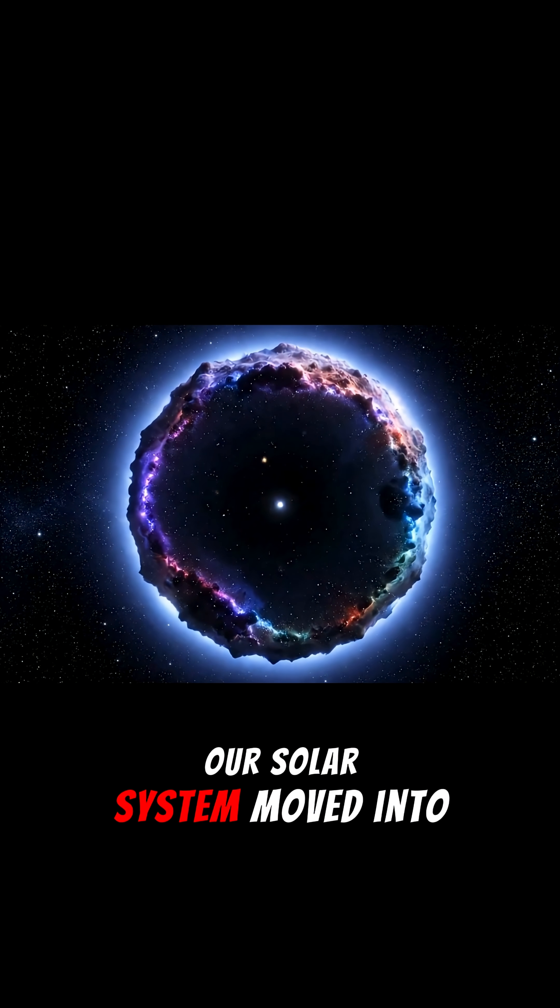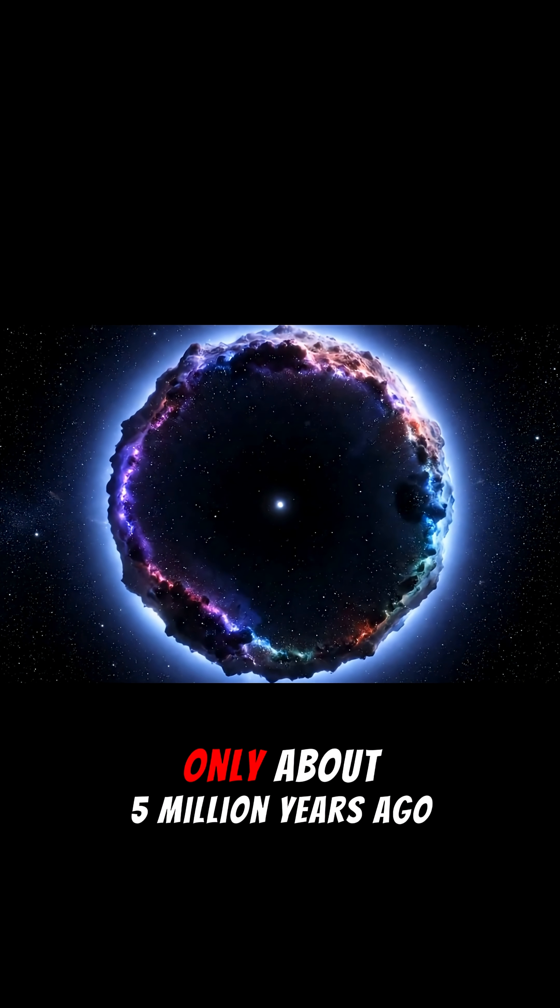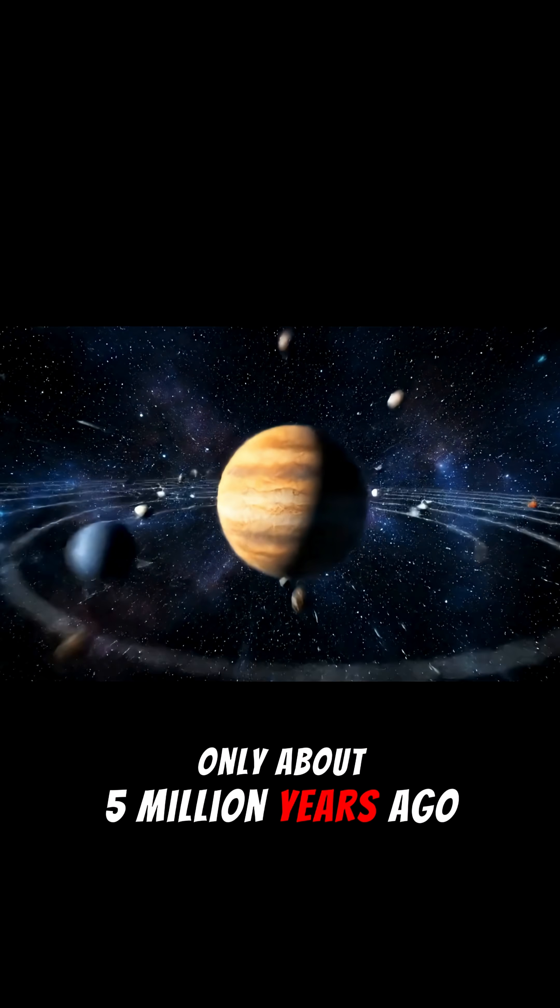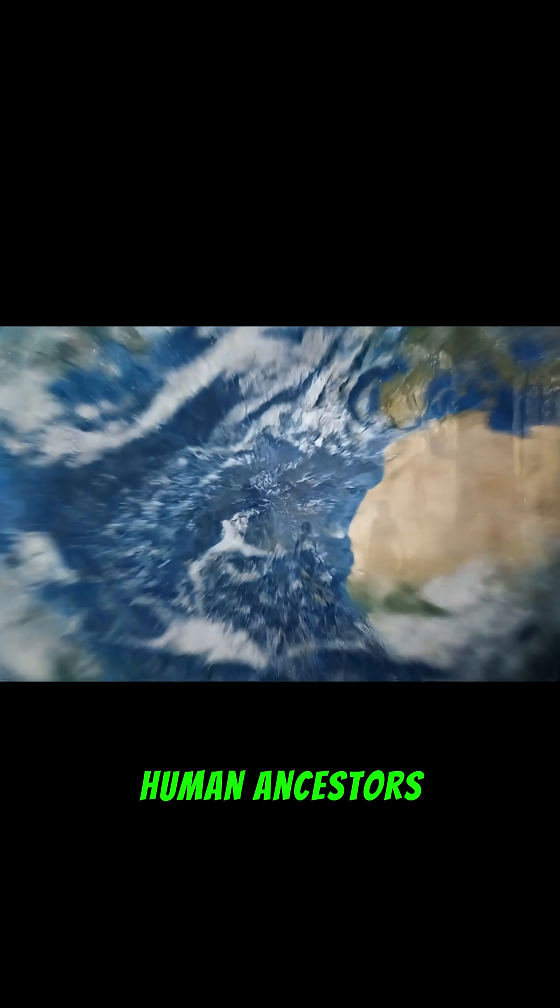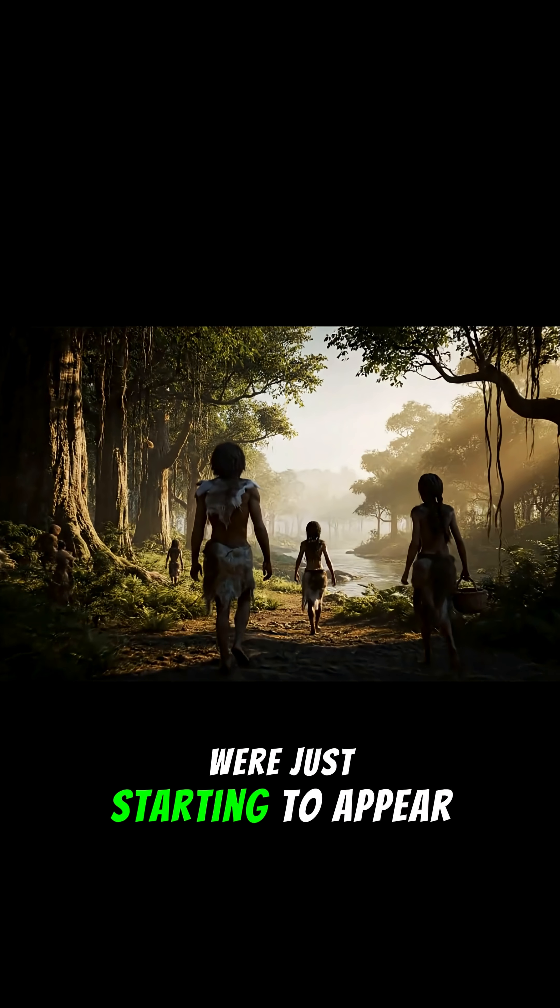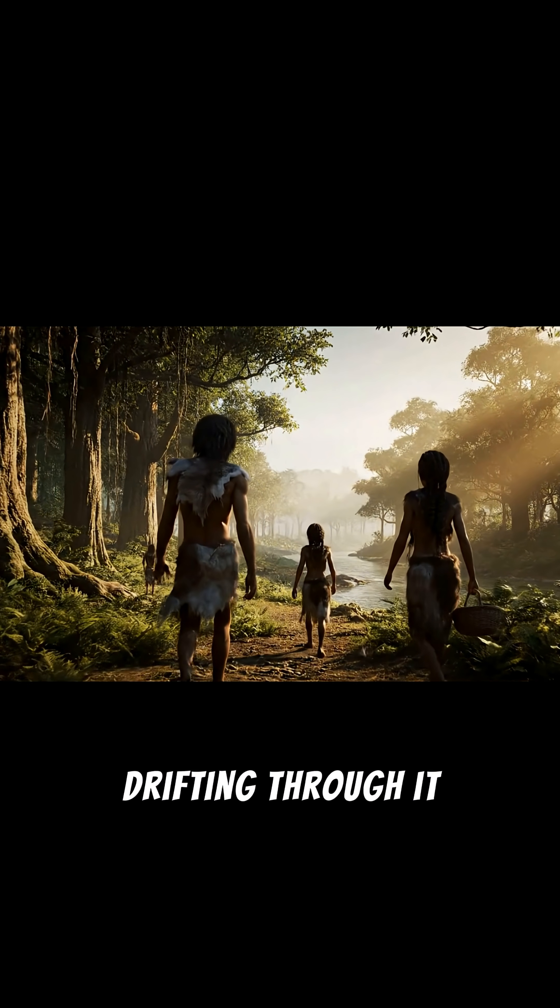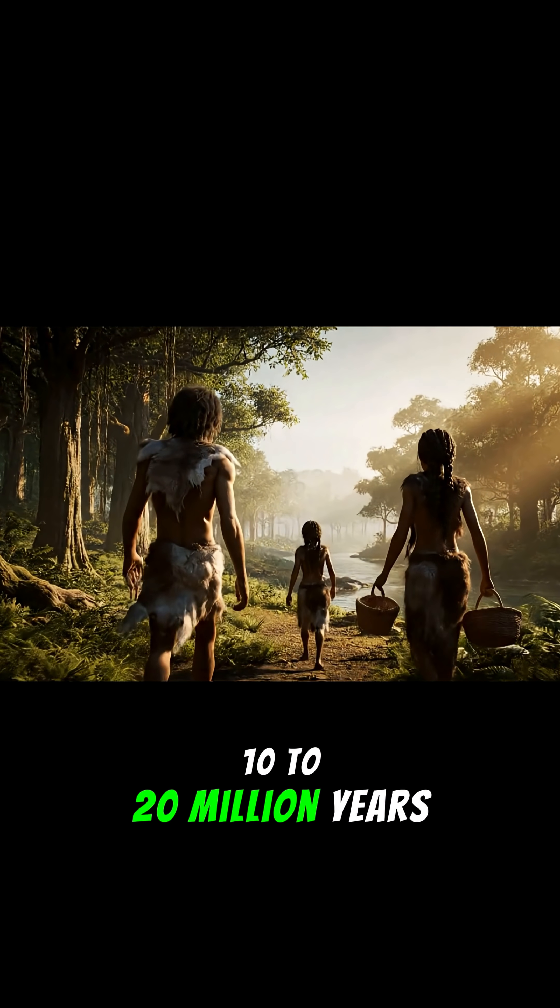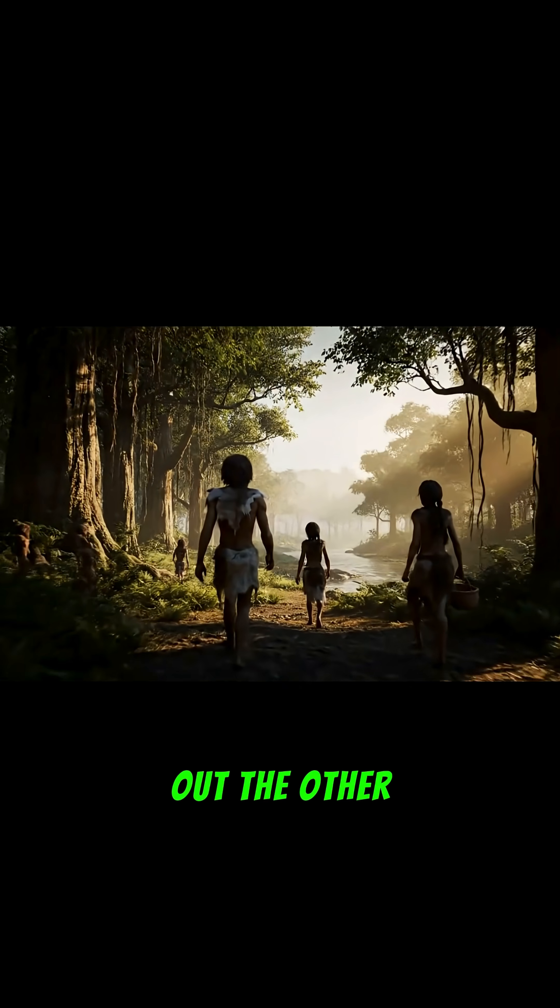Here's the crazy part. Our solar system moved into this bubble only about 5 million years ago, right when early human ancestors were just starting to appear on Earth. And we'll keep drifting through it for another 10 to 20 million years before we pass out the other side.